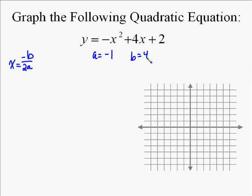To do this, we have to find what's called the vertex, which is the point at the bottom of the U or the V. To find that vertex, we find the x-coordinate first, which is found by the formula negative b over 2a, where a is the value in front of the x squared, b is the value in front of the x. So in this case, a is negative 1, b is 4.